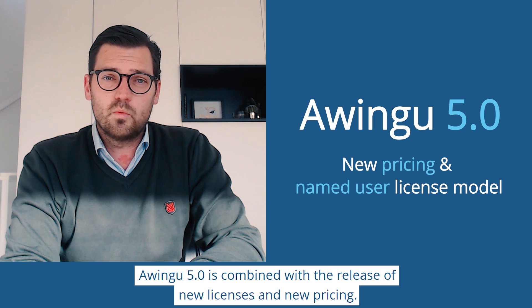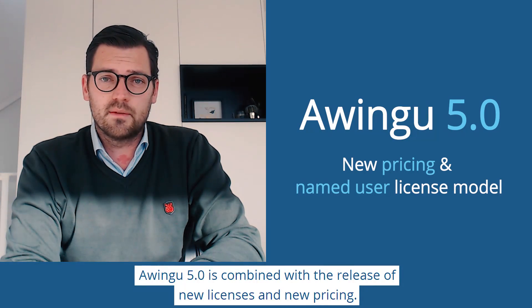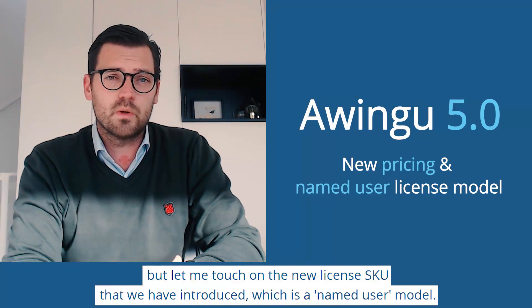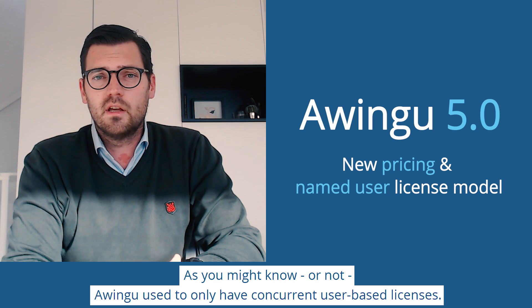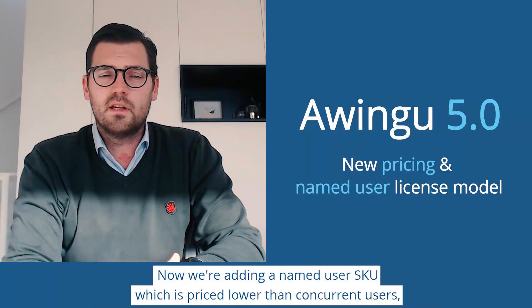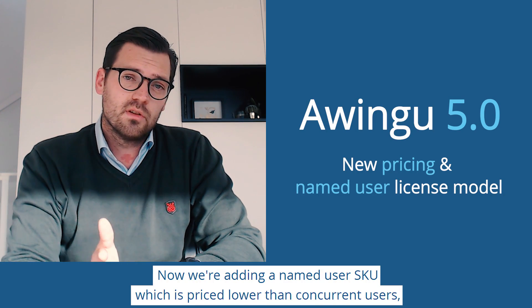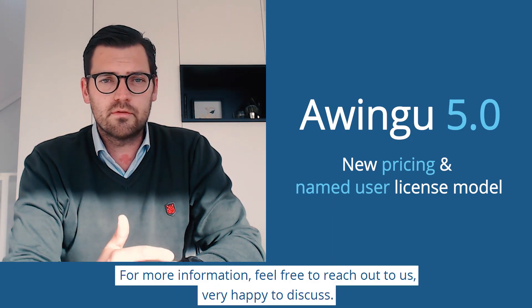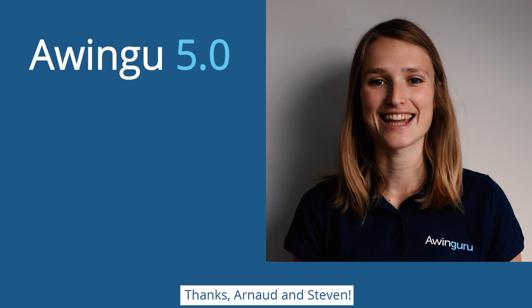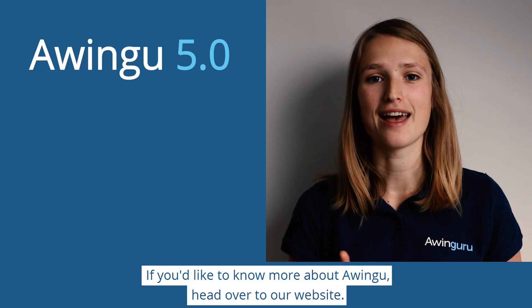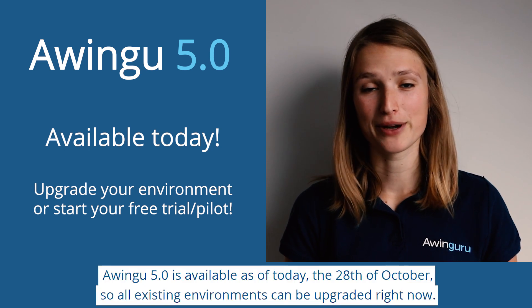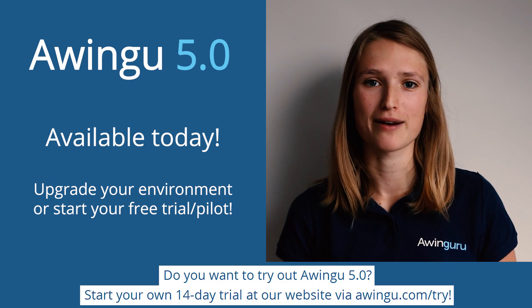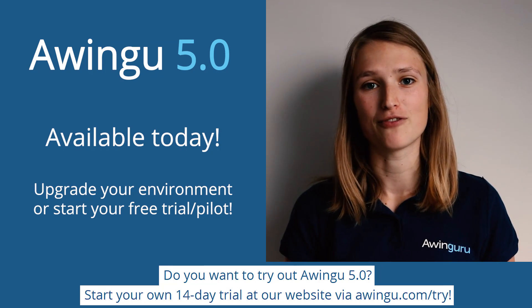Thank you Steven for those demos — very insightful. Owingo 5.0 is combined with the release of new licenses and new pricing, available on our website at awingo.com/pricing. We've introduced a new named user license model, priced lower than our existing concurrent user licenses, and available as of 50 users. Owingo 5.0 is available as of today, the 28th of October, so all existing environments can be upgraded right now. To try Owingo 5.0, start your own 14-day trial at awingo.com/try.